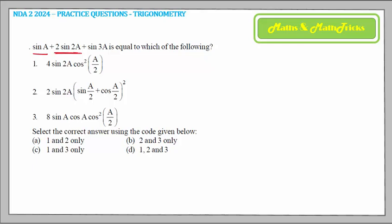Moving on to the next question: sin a + 2 sin 2a + sin 3a is equal to which of the following? In the options, two or possibly all three statements could be correct, so we have to find out which statements are correct. Let us check them one by one, but first simplify the given expression.